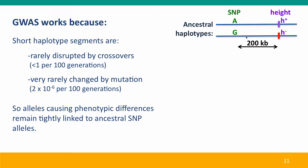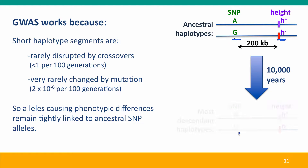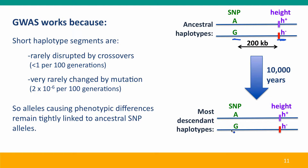Here's our SNP locus again, and here's our height locus — let's say they're about 200 base pairs apart. Because these haplotype segments are rarely disrupted by crossovers, less than once per 100 generations, and very rarely changed by mutation — about 2 times 10 to the minus sixth per 100 generations — alleles causing phenotypic differences are going to remain tightly linked to the ancestral SNP alleles they were originally linked to. And we'll see this in the descendants. This is what a genome-wide association study detects: this linkage between the SNP locus and the height locus.